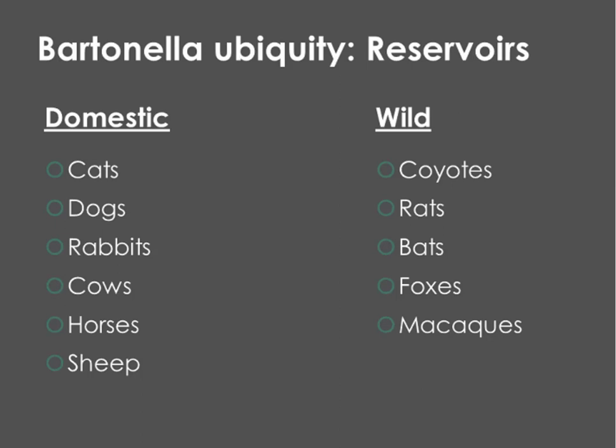With respect to ubiquity, Bartonella utilizes a variety of reservoirs, both domestic and wild. We are most familiar with cats as reservoirs for Bartonella henselae, but dogs, rabbits, cows, horses, and sheep have also been known to harbor the bacteria. In the wild, coyotes, rats, bats, foxes, and even rhesus macaques are known to be natural hosts for Bartonella species.